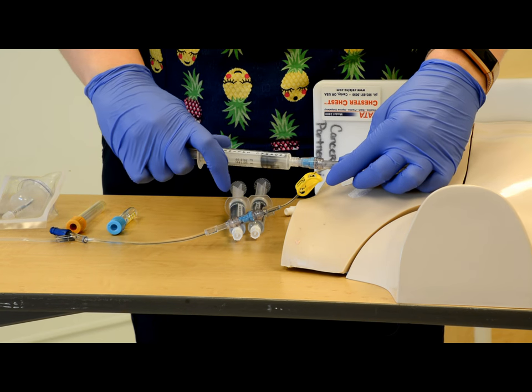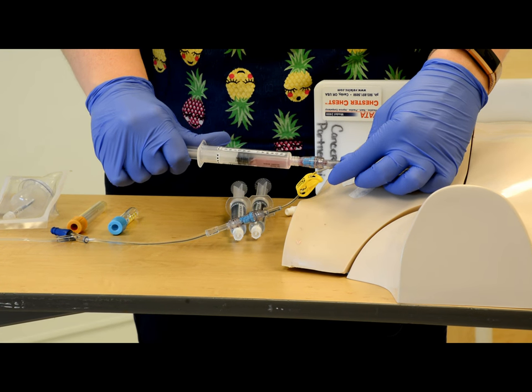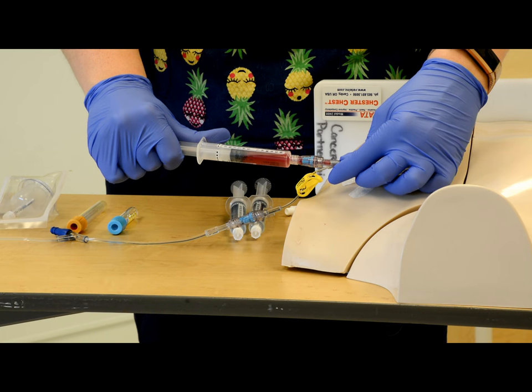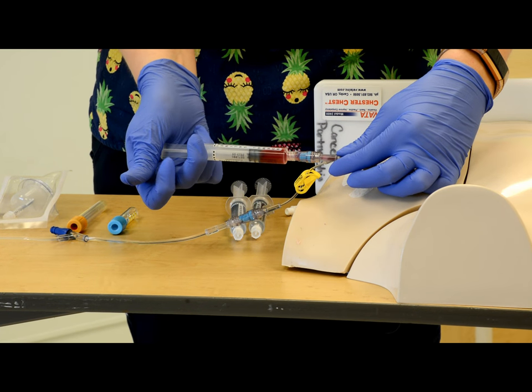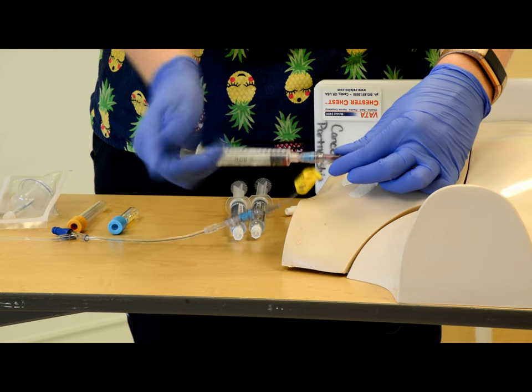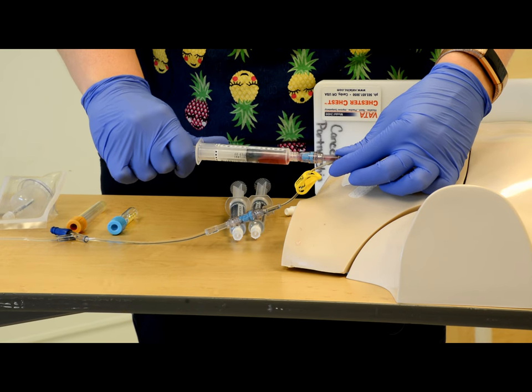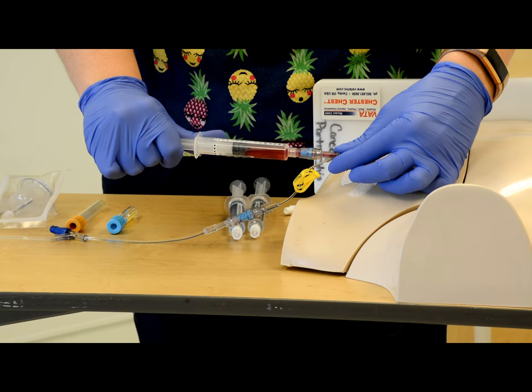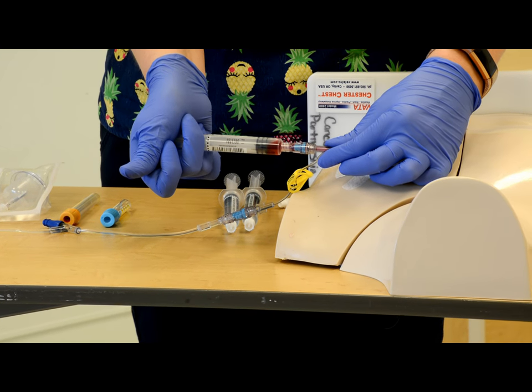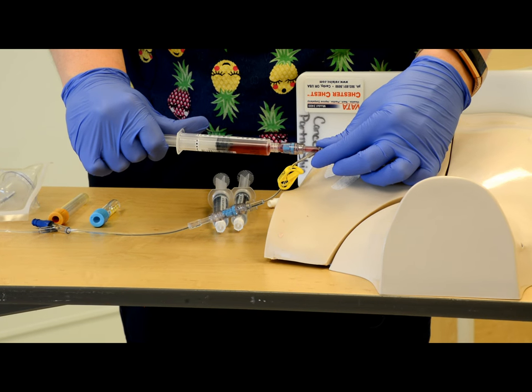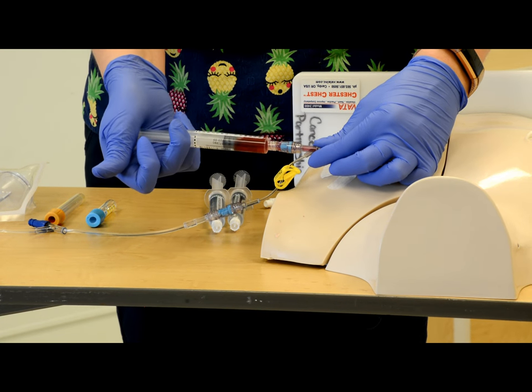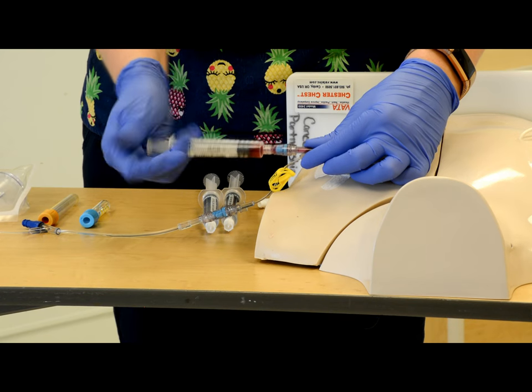And then you're going to pull back and get 4 to 6 mls of blood return. And then in a fluid motion, you're going to push that in again, and pull back 4 to 6 mls. You'll do this 3 to 5 times, 5 is the recommendation. Make sure not to use the push pause method when you're doing this.